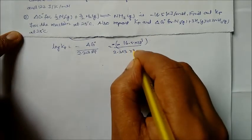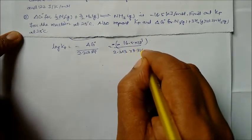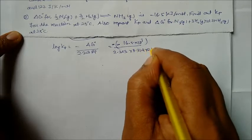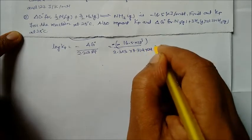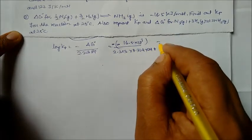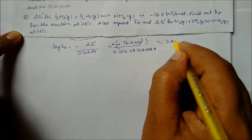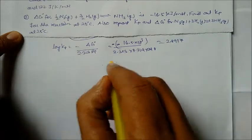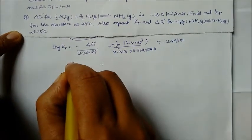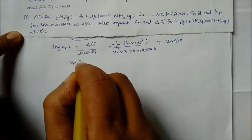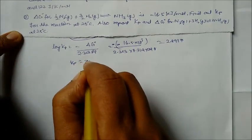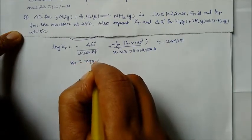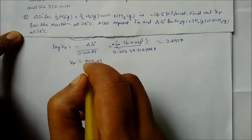Multiplying by 8.314 × 298 in the denominator, we get log Kp = 2.8917, so Kp = 779.41.